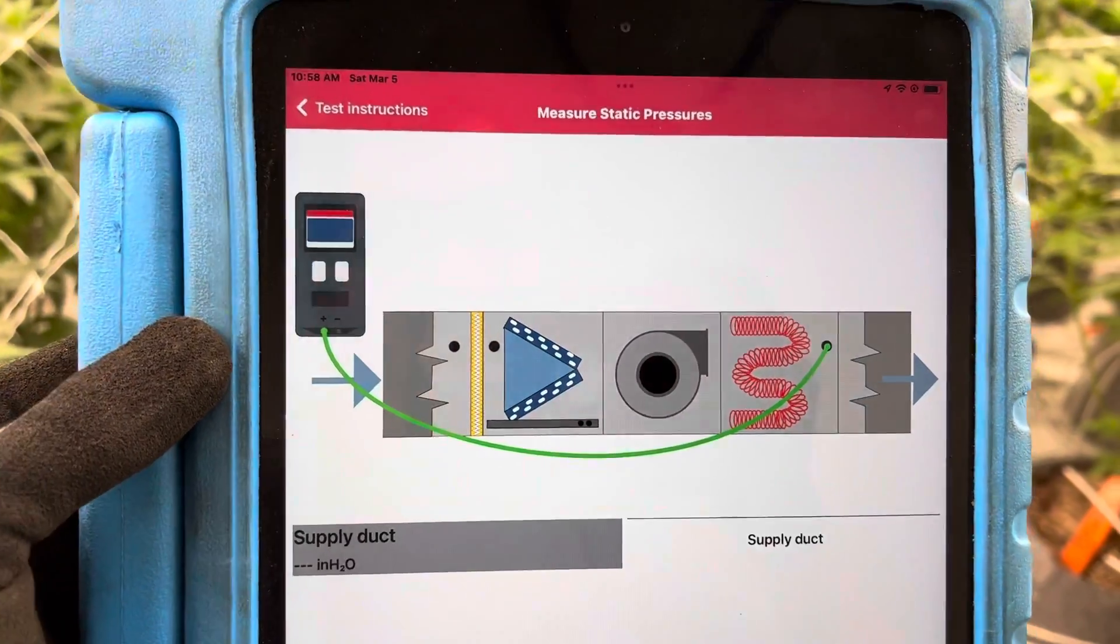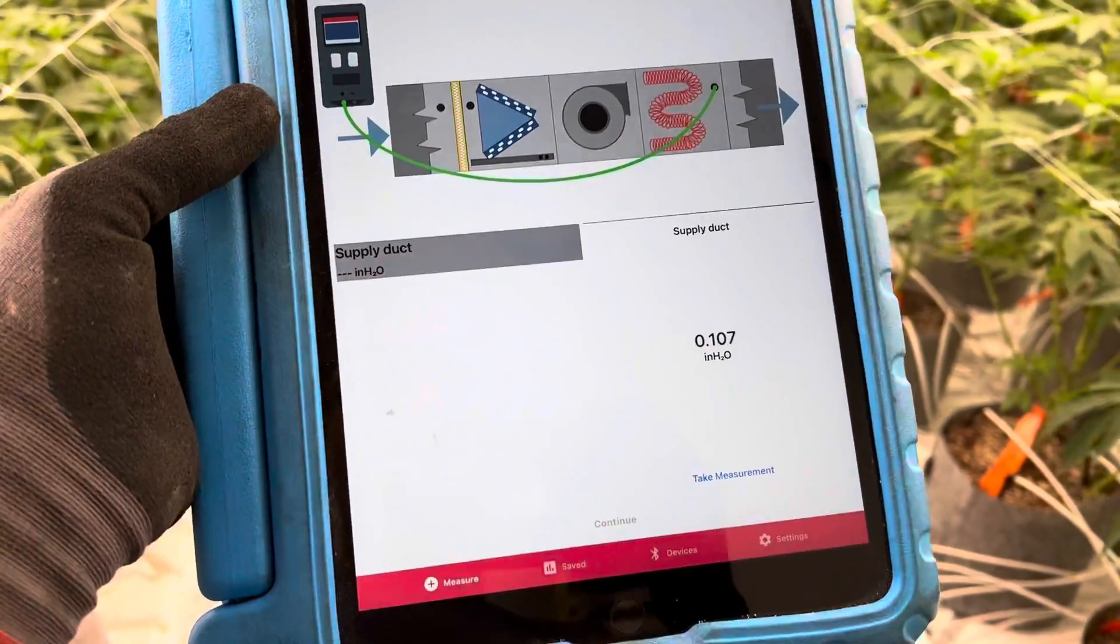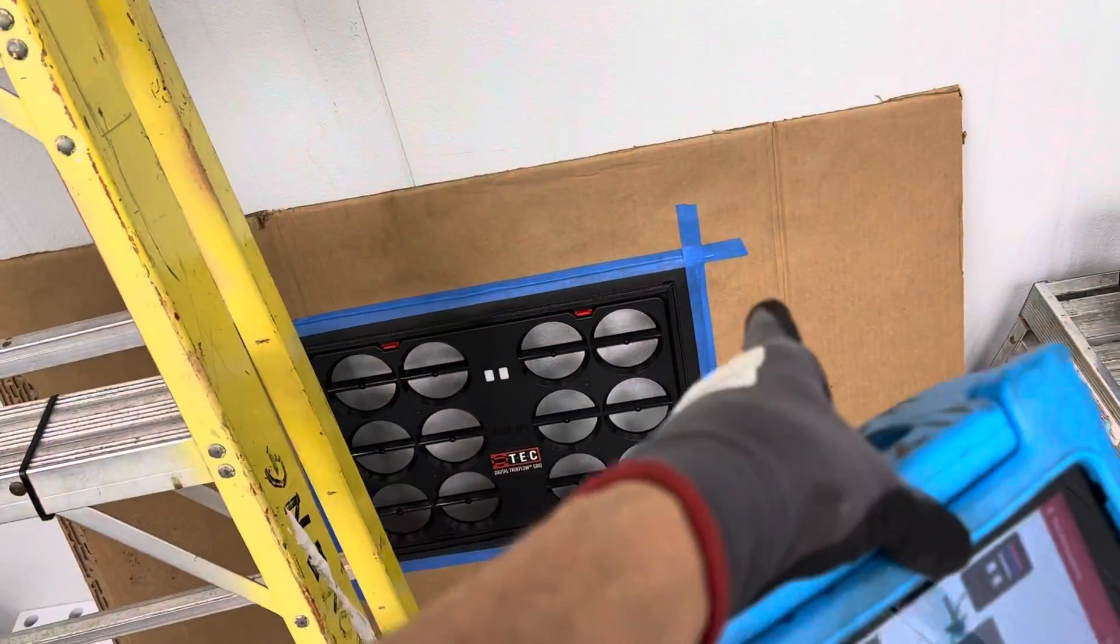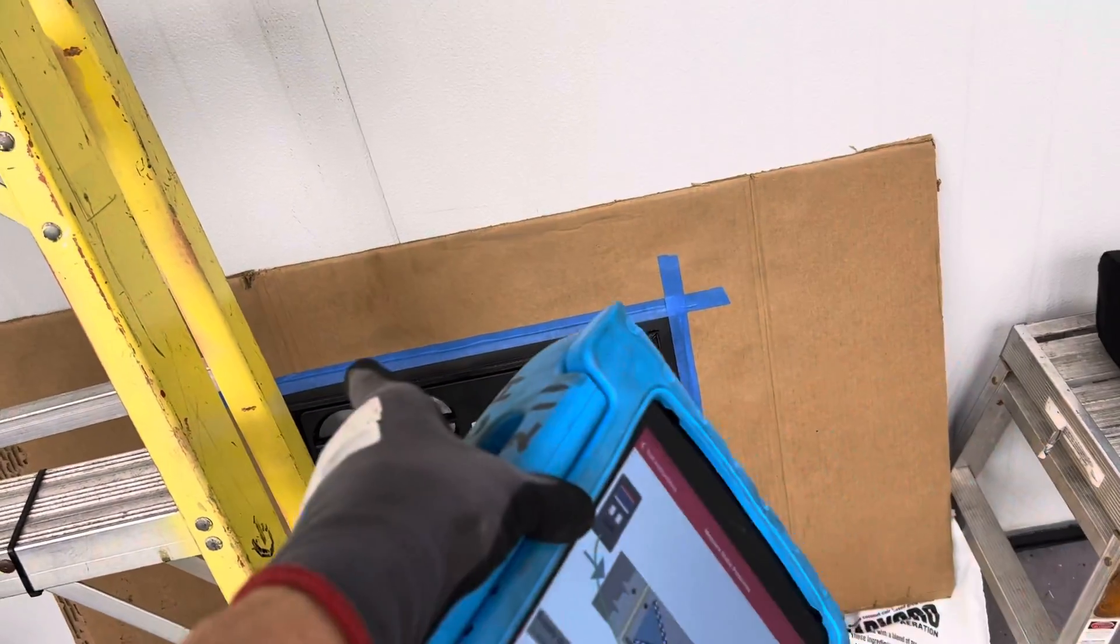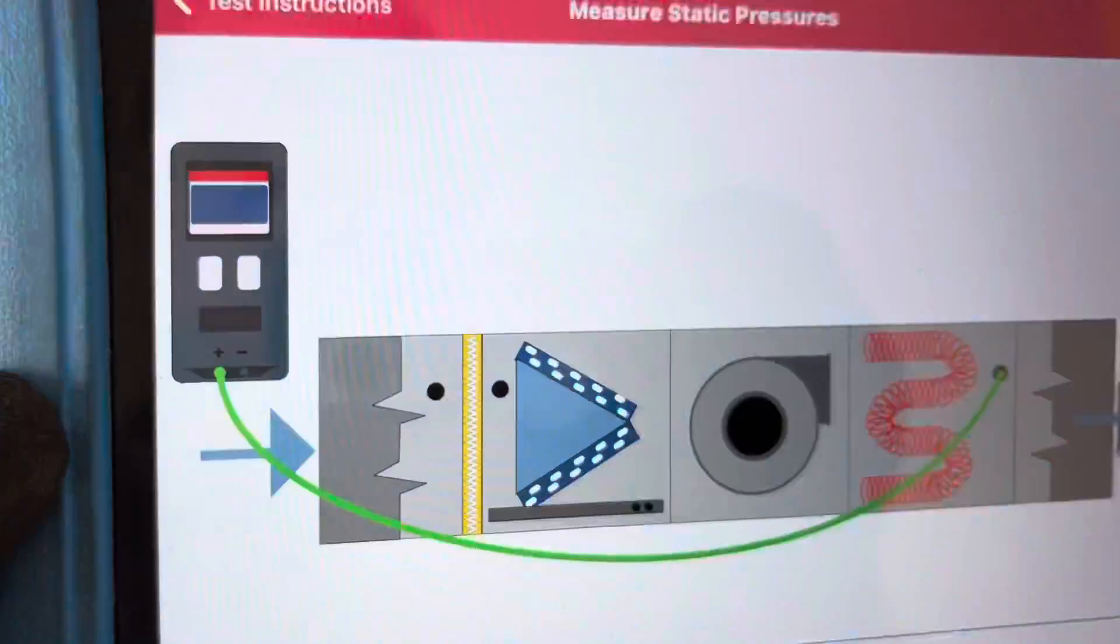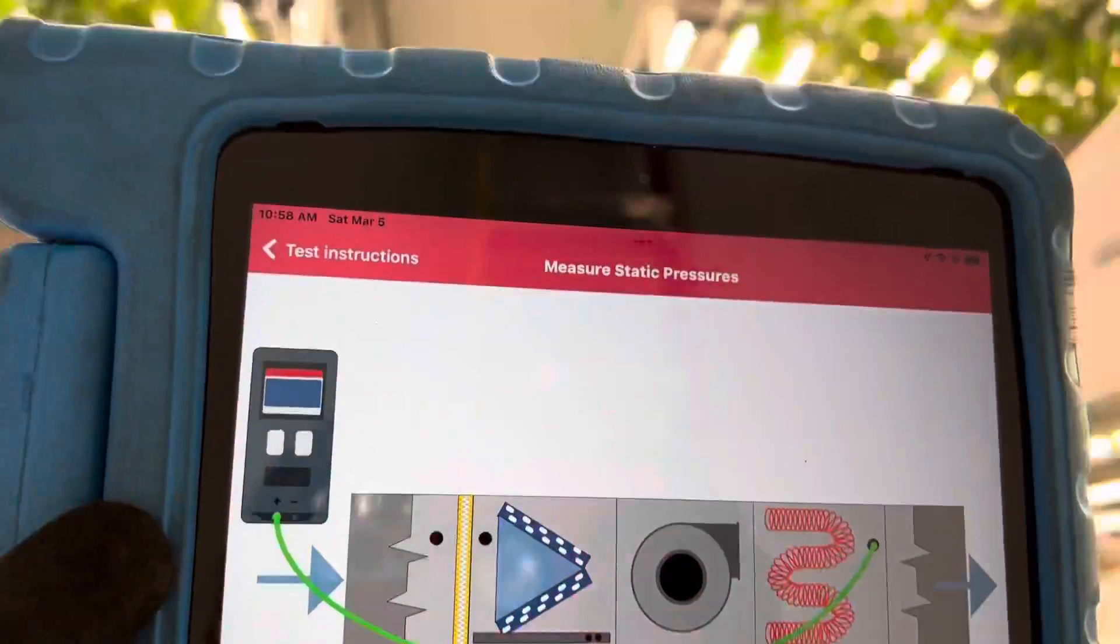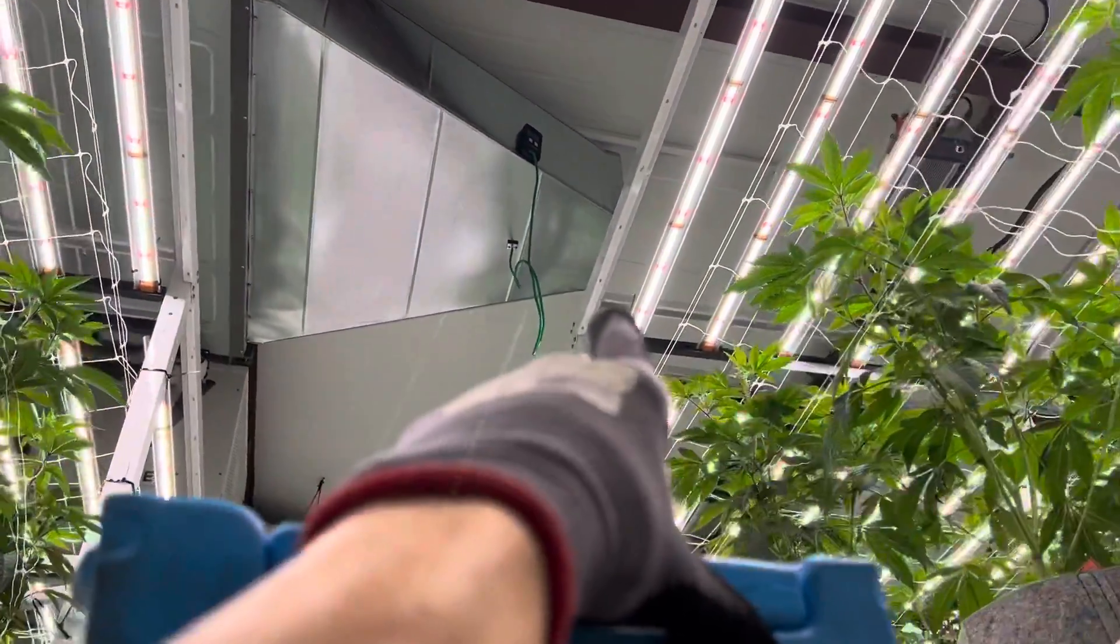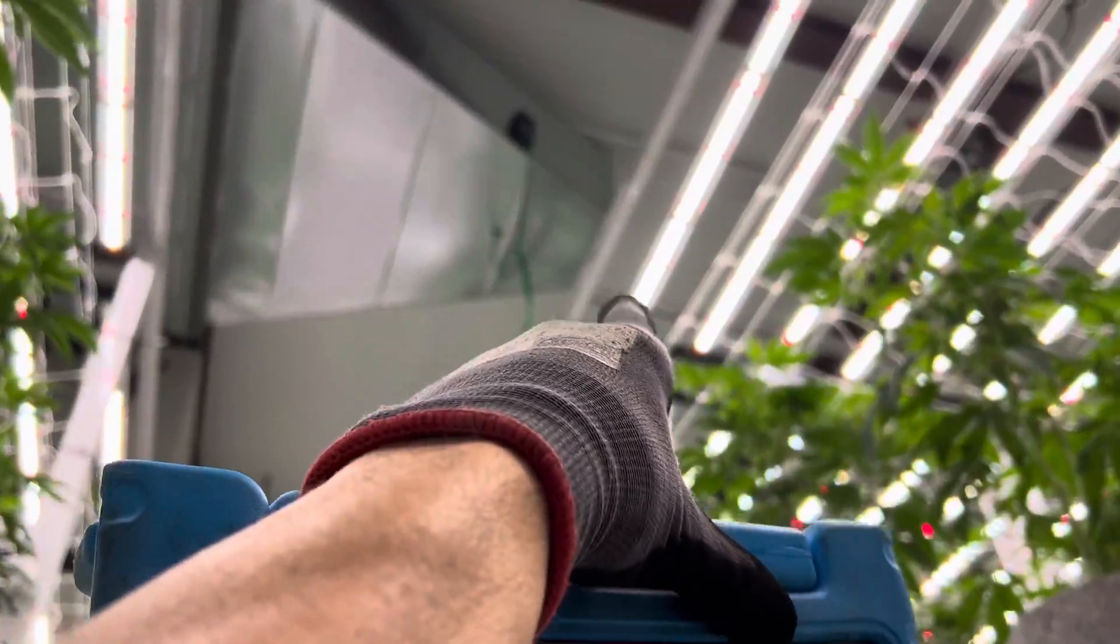All right, about to take a flow measurement using the true flow grid, which you can see right there. I have it in the cardboard adapter to replace the filters, and I just drilled a hole in the ductwork. You can see where the magnet is holding in the hose going in.